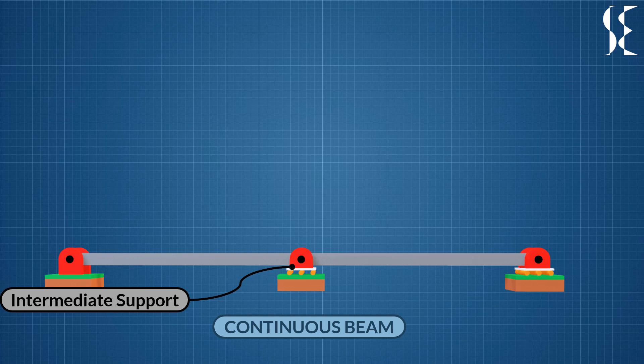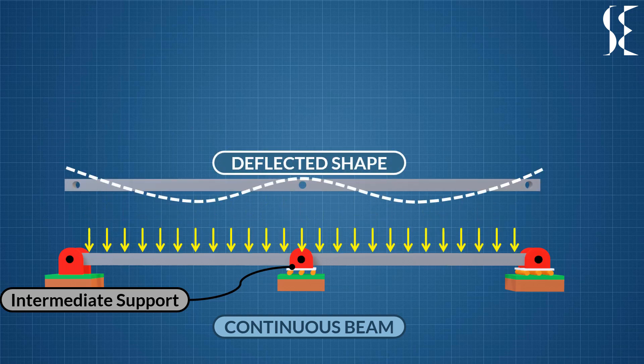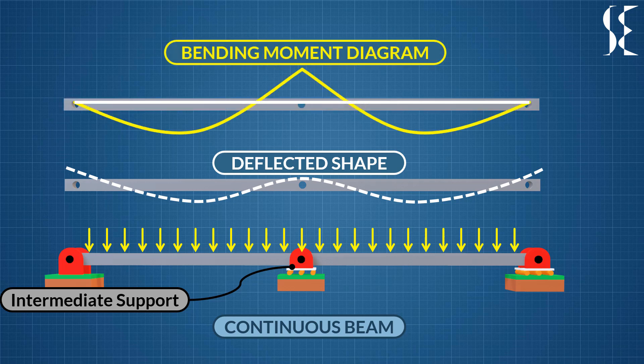In this illustration, the continuous beam is loaded uniformly. Dash lines show the deflected shape of the beam where end support allow rotation but middle support resist the rotation. Hence zero moment at the ends and some value of moment in the middle.